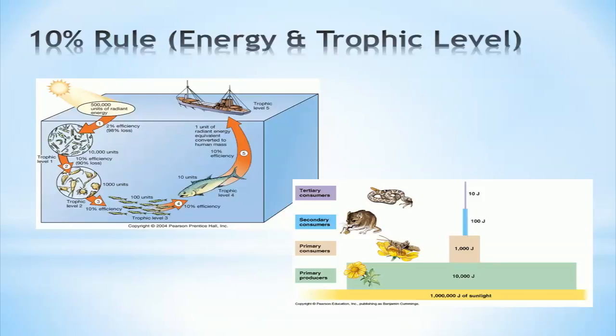This means that for every increase in trophic level, there is a 90% loss in available energy, or 10% of the available energy from one trophic level is available to a higher trophic level.